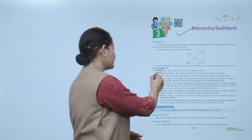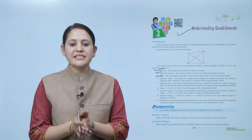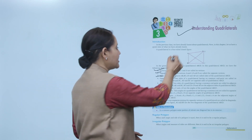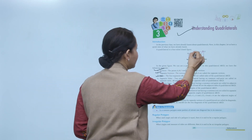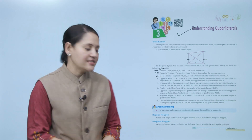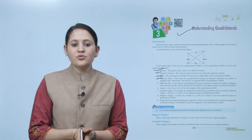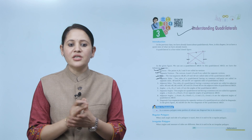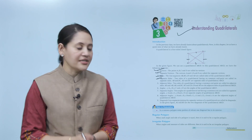Next are sides. The line segments AB, BC, CD, and AD are called the sides of the quadrilateral ABCD. Next, opposite sides: two sides of the quadrilateral having no common endpoint are called opposite sides. AB and DC, and AD and BC are opposite sides of the quadrilateral.